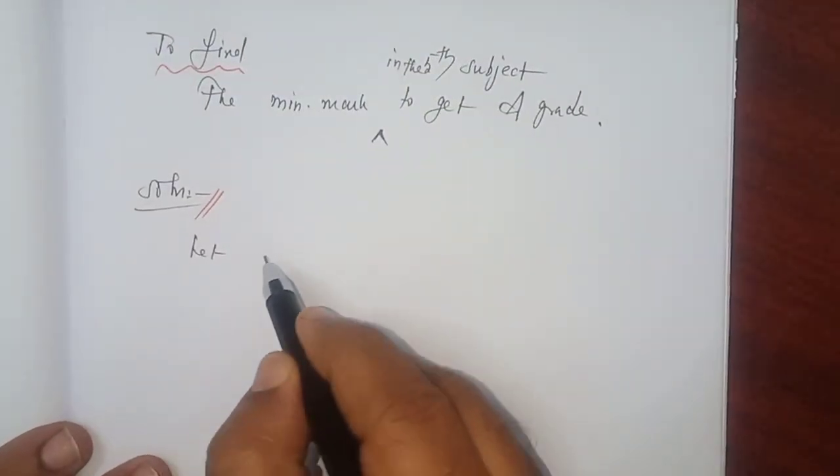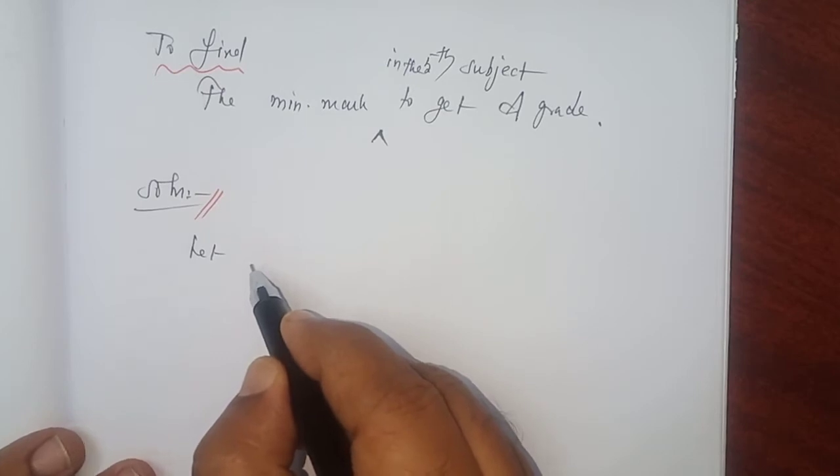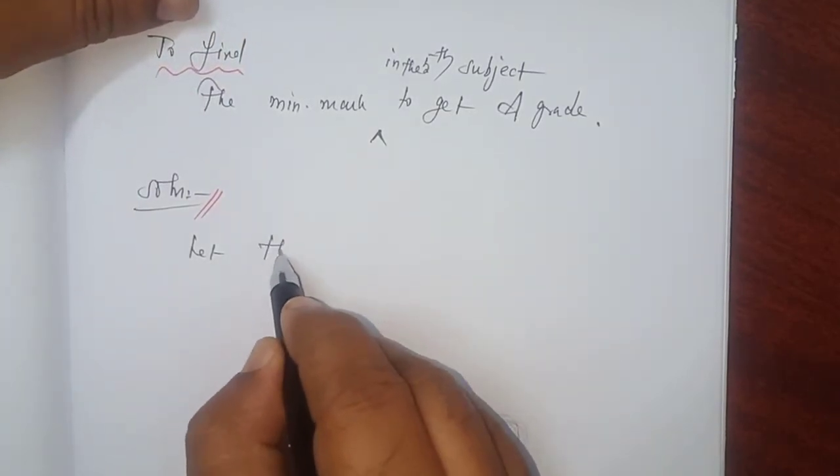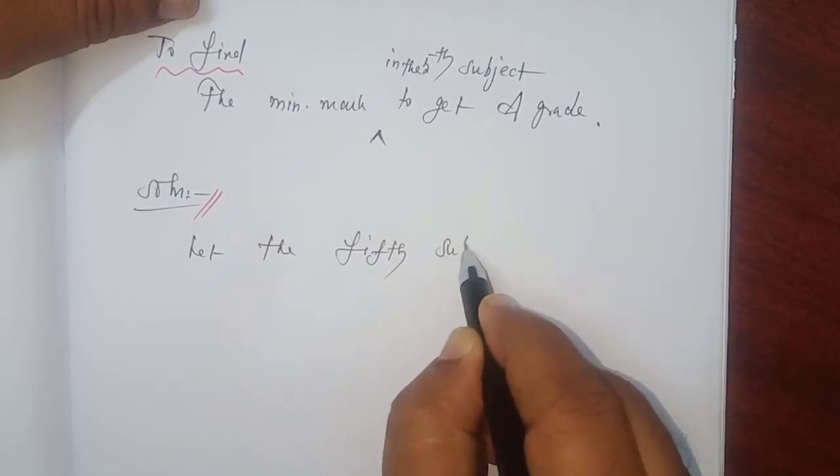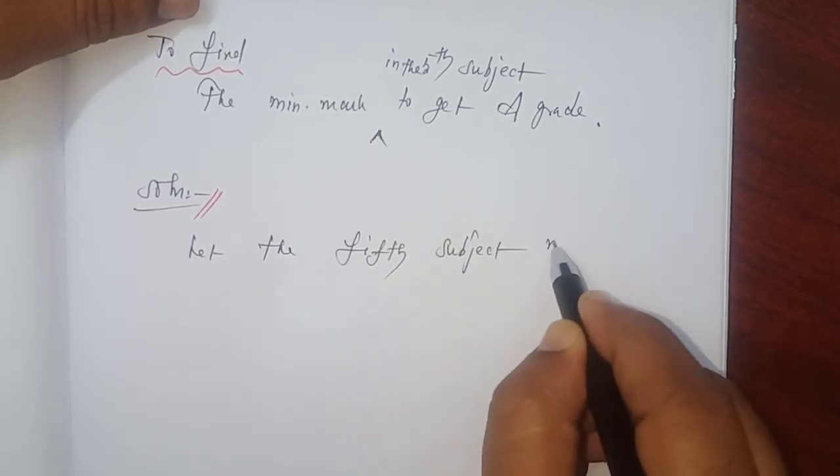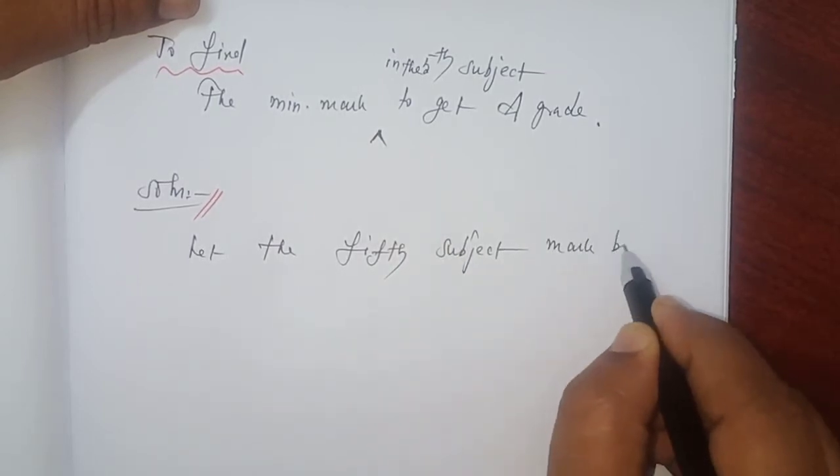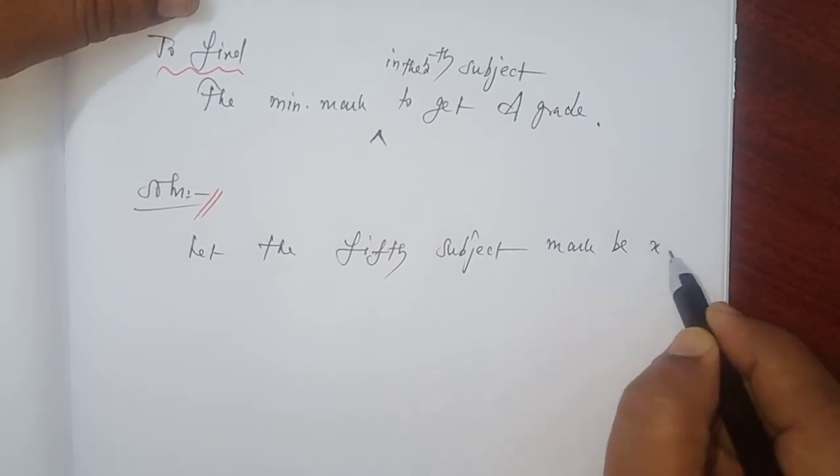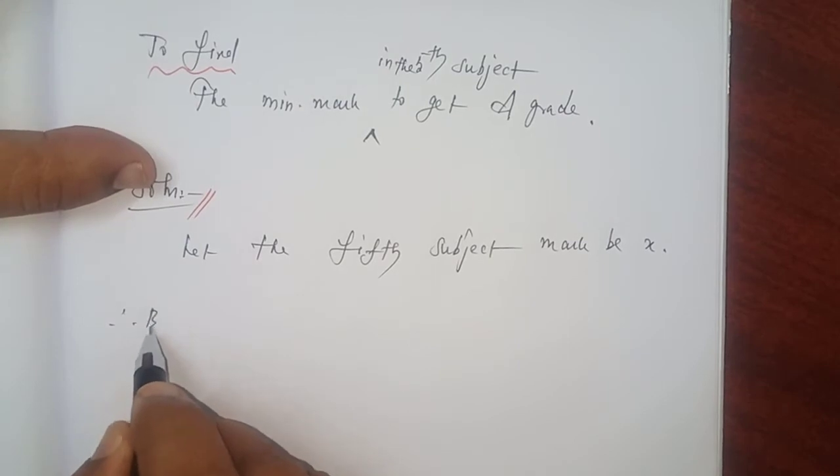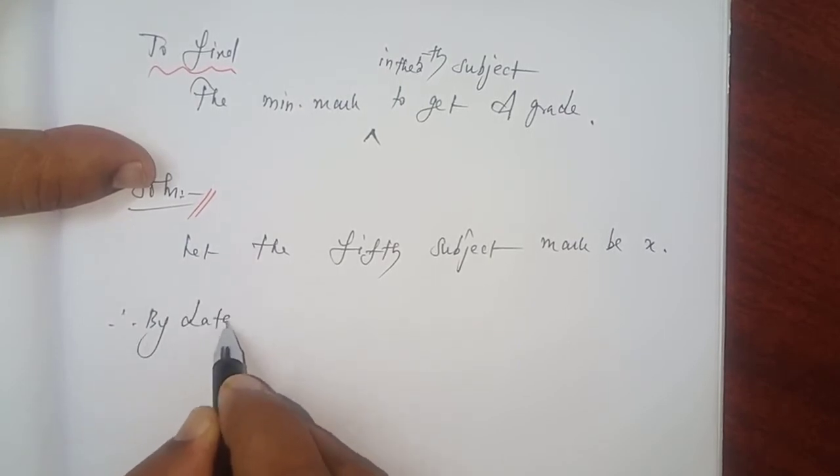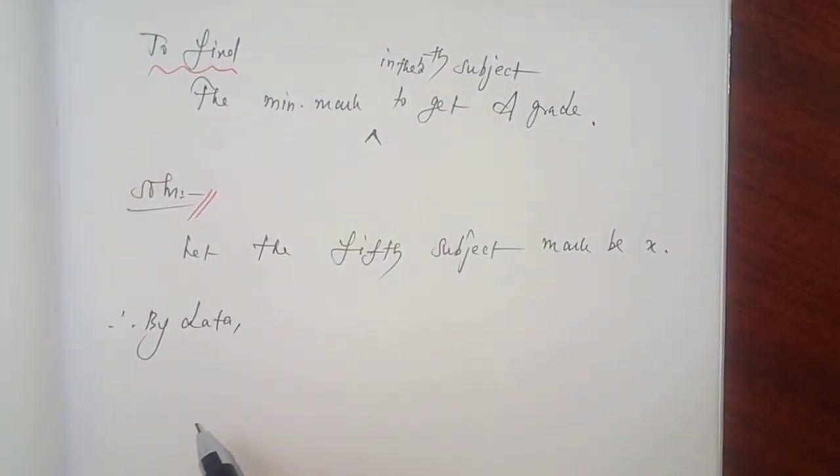I consider, let the 5th subject mark be X. Therefore, by data, 4 subjects marks, you know that 84, 87, 95 and 91.